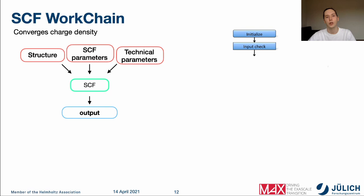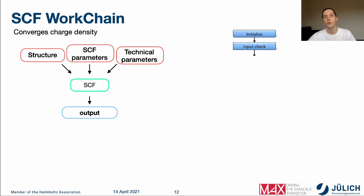Now let's have a deeper look at the self-consistent work chain, which is responsible for converging the charge density. When you submit a single Floor calculation, no one guarantees that you will successfully converge the charge density, because several problems might occur. For example, in 24 hours only three iterations might be done because the structure is too large, and a single Floor calculation will just fail because the supercomputer does not allow calculations longer than 24 hours. The self-consistent work chain will understand this and automatically submit new iterations to resolve the problem.